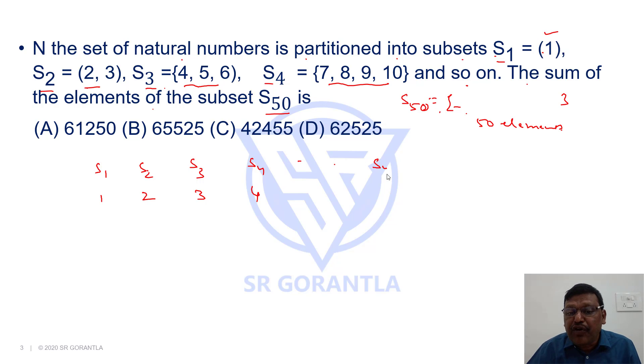Like this, S49 will have the following 49 natural numbers. So why we need this is, if you can identify the last element of S49, we can say S50's first element.